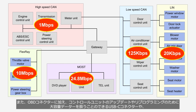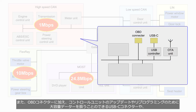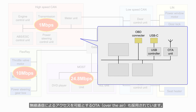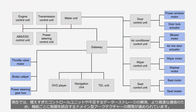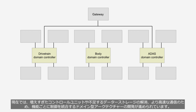Furthermore, in addition to OBD connectors, USB-C connectors capable of handling large-capacity data, and over-the-air (OTA) units enabling wireless communication access for control unit updates and reprogramming are now available. With the increased access methods to in-vehicle communication circuits, measures to prevent unauthorized intrusions have been advanced. Currently, in order to address the proliferation of control units and inadequate data storage, as well as to achieve faster communication, the development of domain-oriented architectures which integrate control for specific functions is being advanced.